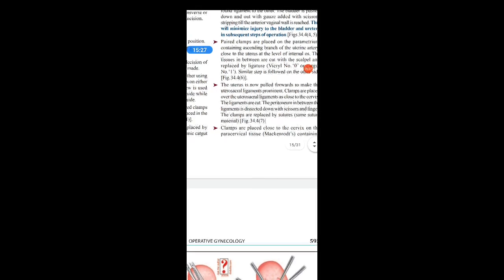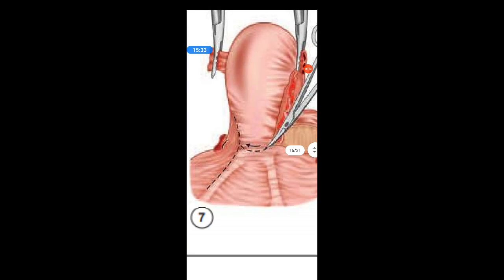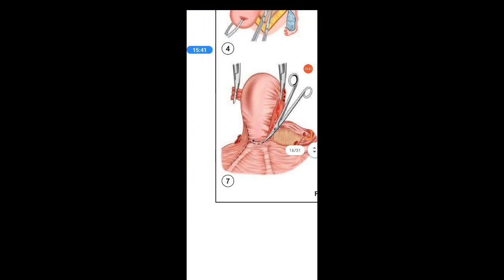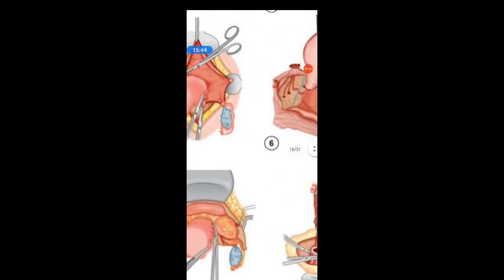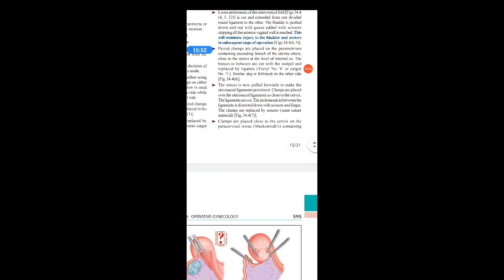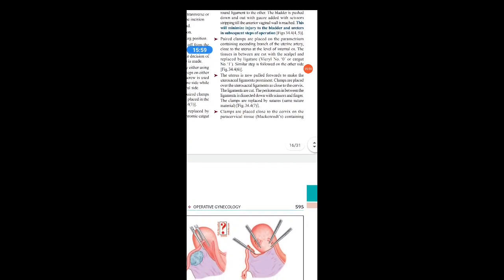The uterus is now pulled forwards to make the uterosacral ligaments prominent. Clamps are placed over the uterosacral ligaments as close to the cervix as possible. The ligaments are cut and the peritoneum between the ligaments is dissected down with scissors and fingers. The clamps are replaced by suture material. In the diagram, after pulling the uterus forward, the uterosacral ligaments become visible and the clamps are placed over them.